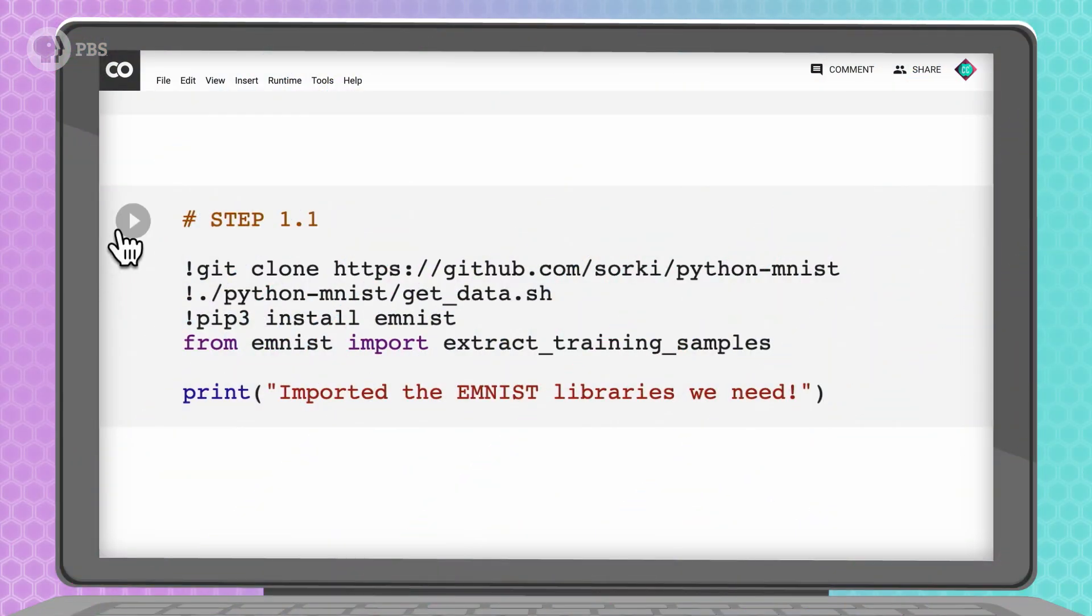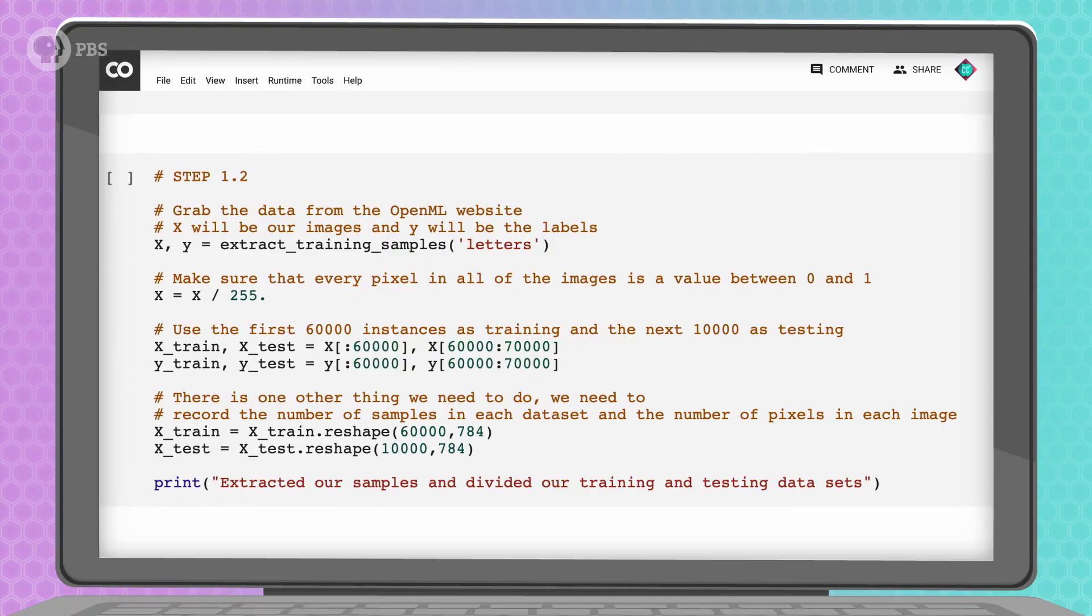This code here will give our program access to this dataset, also called Importing It. So now, we need to make sure to keep our training and testing datasets separate, so that when we test for accuracy, our AI has never seen the testing images before. So now in our code at step 1.2, let's call the first 60,000 labeled images train, and the next 10,000 labeled images test.